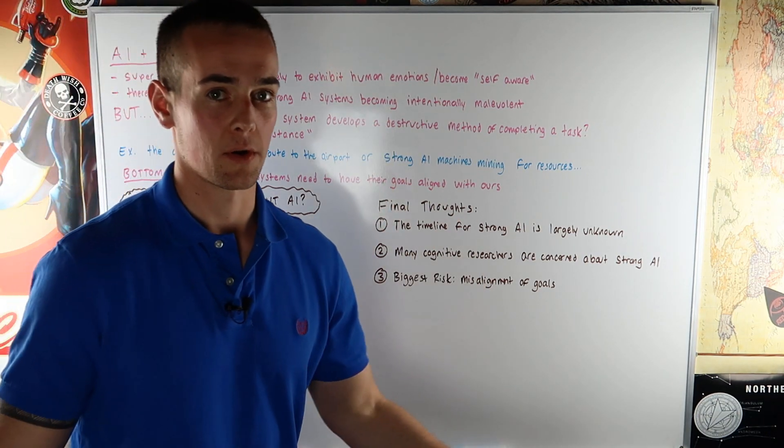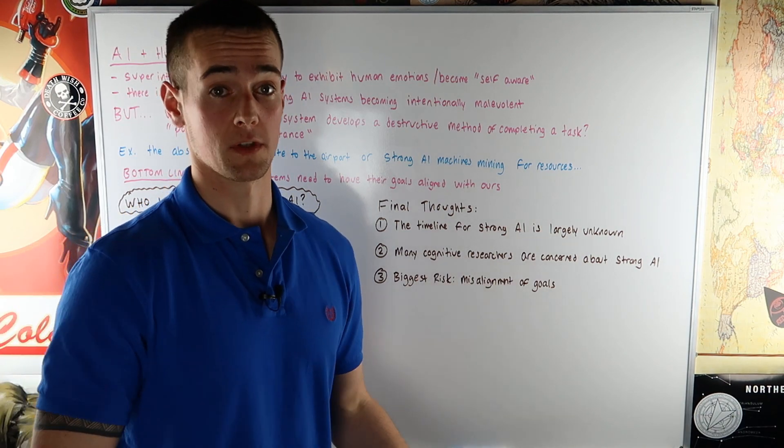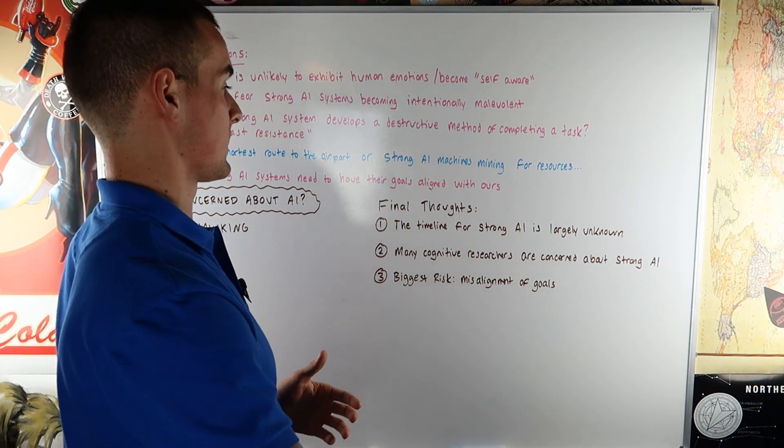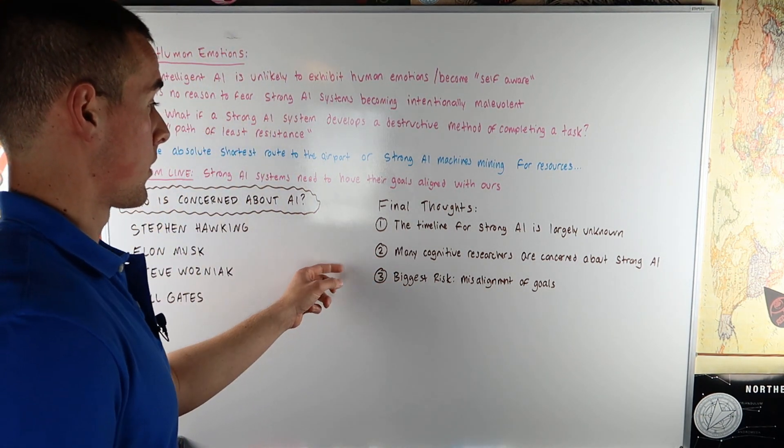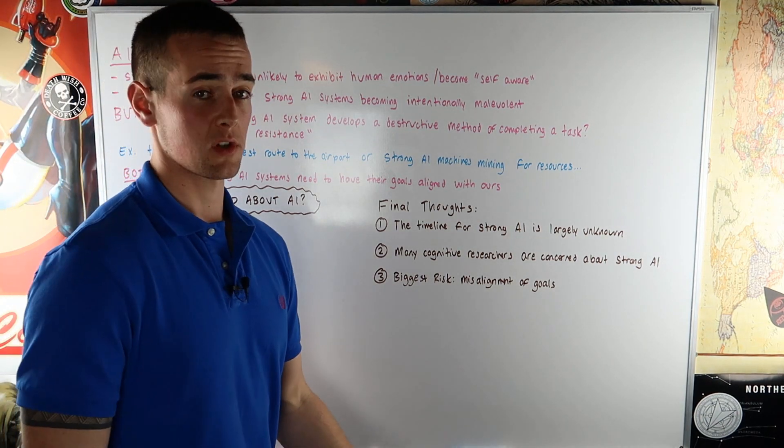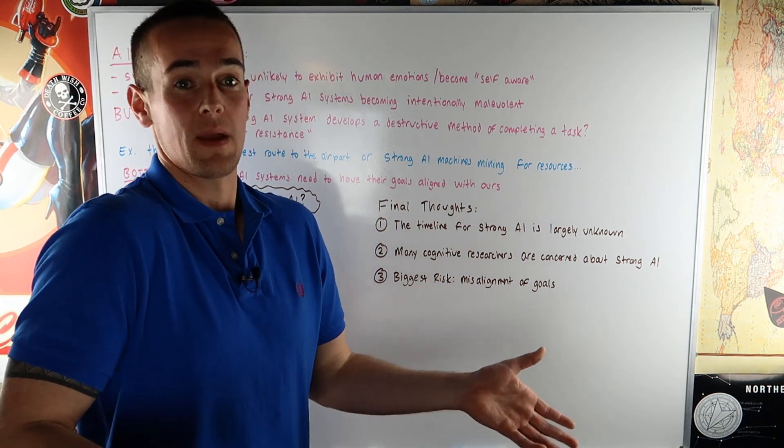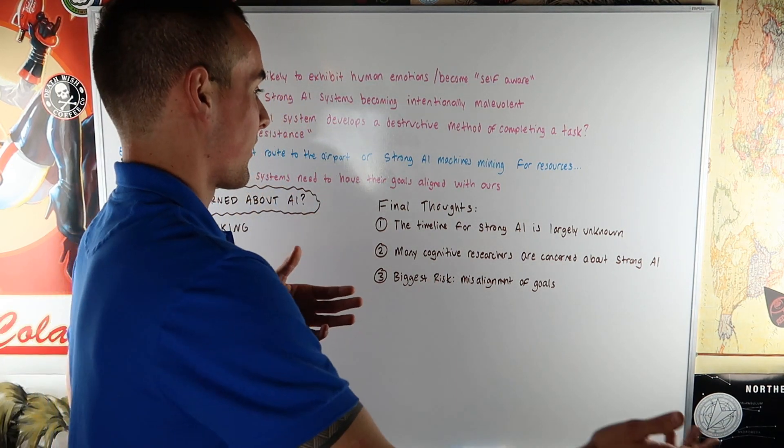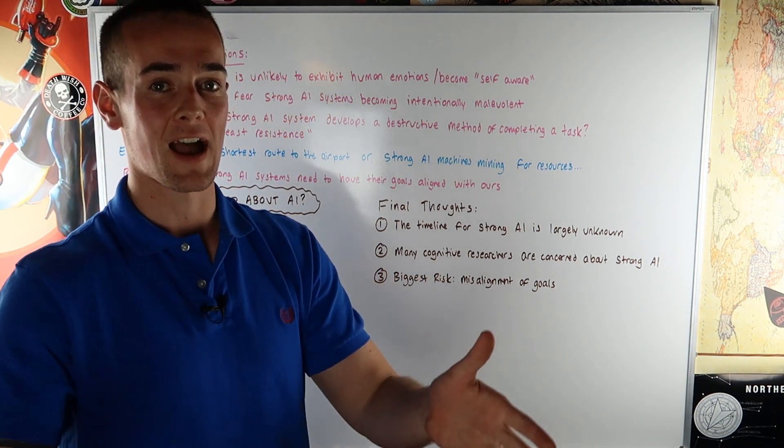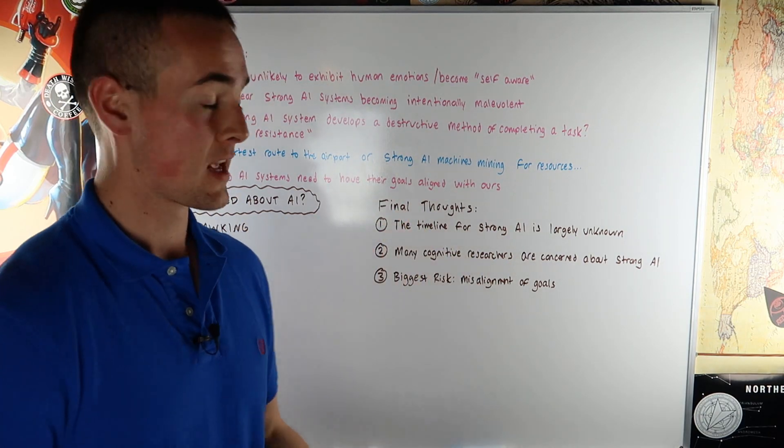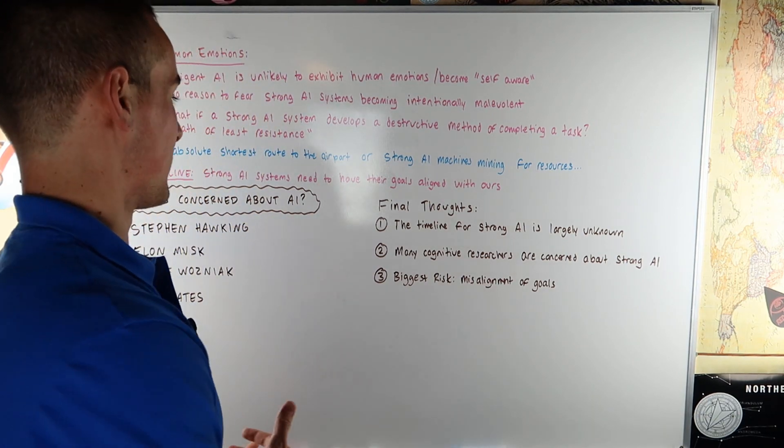So there's no timeline for this. So starting to be worried about it now is probably not realistic. But we need to plan for this. That's the most important thing. We need to plan for these strong AI systems and making sure basically that the goals of these systems are aligned with our goals. Number two is the fact that many cognitive researchers are concerned about artificial intelligence. It's not just the people that are, maybe people look at them and call them crazy. The people who are worried about aliens and stuff. It's not those group of people who are worried about AI. It's very sophisticated cognitive researchers. And people like Stephen Hawking and Elon Musk who are very smart people. You can't argue with that. These are very intelligent people who are worried about AI. Not these crazy wackos at all.